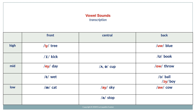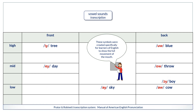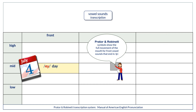And here's our vowel sound chart. First, we're going to practice vowel sounds that end in Y or W. These symbols were created specifically for learners of English to show the full movement of the mouth. So let's begin.